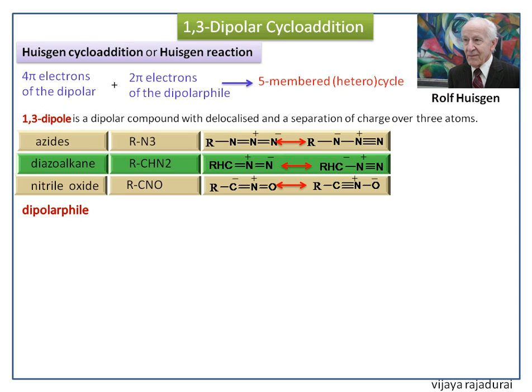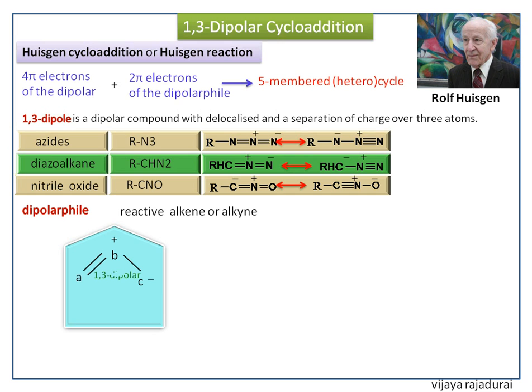Dipolarophiles are alkenes or alkynes that possess related heteroatom functional groups. This is the allyl-type 1,3-dipolar compound. It reacts with the dipolarophile and gives a 5-membered heterocyclic compound.